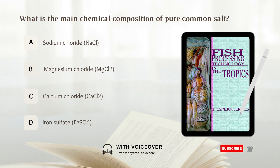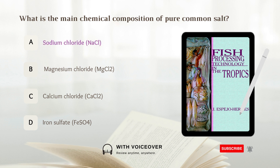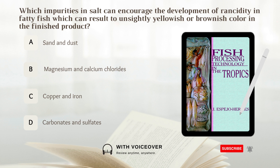What is the main chemical composition of pure common salt? A. Sodium chloride. B. Magnesium chloride. C. Calcium chloride. D. Iron sulfate. Answer: A. Sodium chloride.